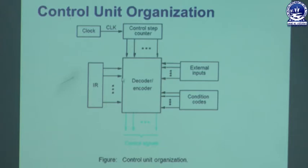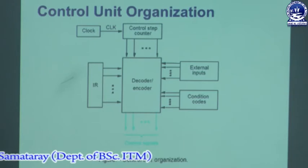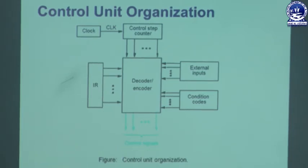In the hardware control part, this is our control unit. If we control the system using the hardware concept, here we are using: a decoder-encoder circuit, an external input circuit, control step counters, clock, and instruction registers. The control signals are generated by the control unit, and those control signals are determined by some information like the content of the control step counter and the content of the instruction register — because whatever instruction we load in the instruction register, according to that we have to generate the control signal.